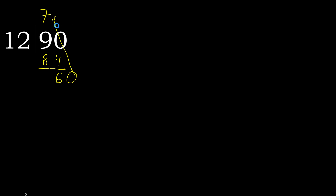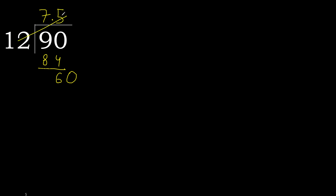0 point. Now, 12 multiplied by 6 is 72 — that is greater than 60, so try multiplied by 5, which gives 60. 60 is not greater, so subtract: remainder is 0. Therefore finished — 90 divided by 12 equals 7.5.